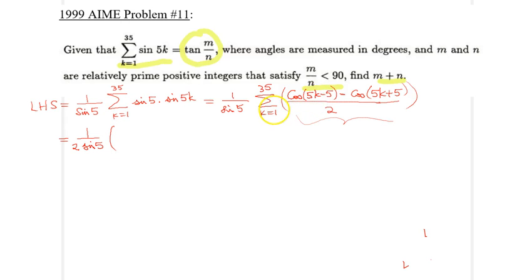When I plug in k equals 1, I would get cosine 0 minus cosine 5. And then when I plug in 2, I would get cosine 5 minus cosine of 15. Oh, sorry.